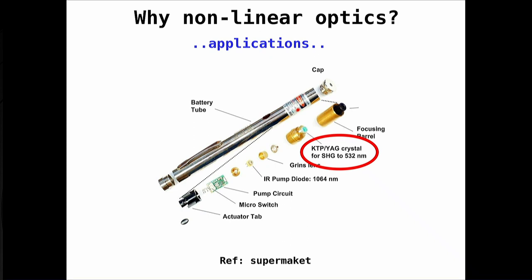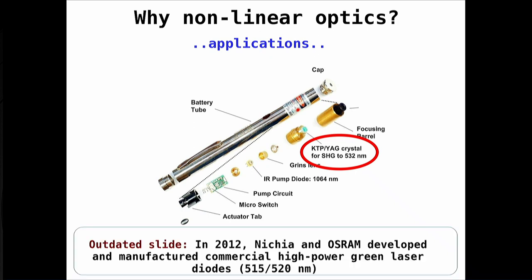This technique is now a bit outdated because Nichia and Osram recently developed direct green lasers, which caused the price of green laser pointers to drop. The first green laser pointers were expensive precisely because they used this nonlinear frequency-doubling technique. There are also many applications of nonlinear spectroscopy in physics research, and I want to show you some examples before discussing how to calculate this.